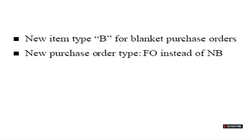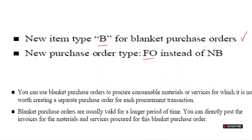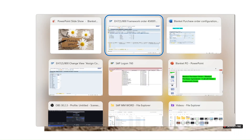New item type B is used for blanket purchase order — as observed, in item category we select B for limit. The new purchase order document type is FO instead of NB used for standard purchase orders. You can use a blanket purchase order to procure consumable material or services for which it's not worth creating a separate purchase order each time. You can directly post an invoice for material and services procured under this blanket purchase order.